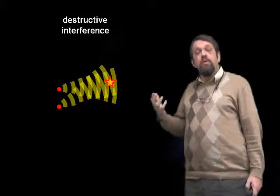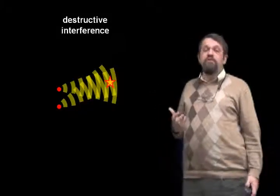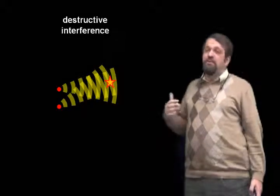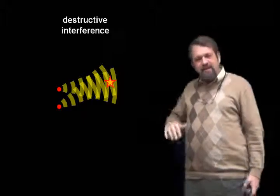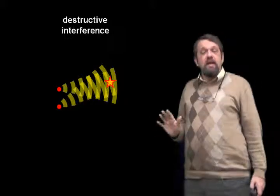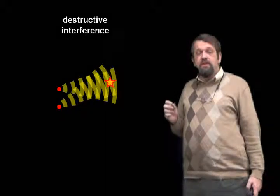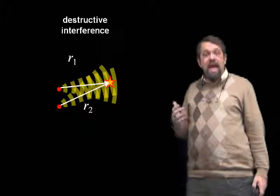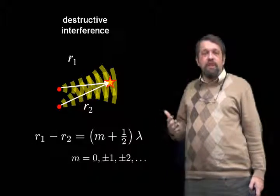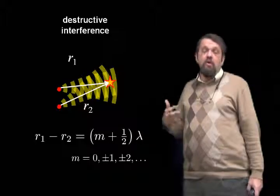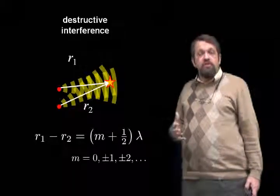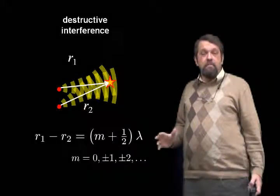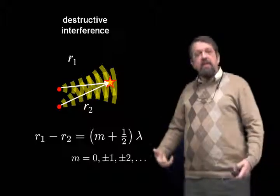Similarly, if we think about a point where there's destructive interference — where the waves exactly cancel out — that's a point where the troughs of one wave arrive at exactly the same time as the crests of the other wave. The positive crest and the negative trough cancel out; you get no wave or very little wave. That will occur if the difference between the two distances R1 and R2 is half of a wavelength or one and a half wavelengths, and so on. It's (M + 1/2) times lambda, where M is an integer. These are the basic conditions for constructive and destructive interference between waves from two sources acting in phase.